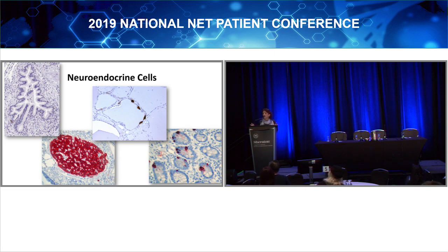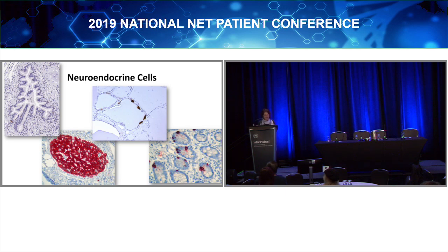For example, when we talk about pancreatic tumors or lung tumors — when we talk about cancers — most of the time they're from all those other cells. But every once in a while, one of them is going to be made from one of these endocrine cells.